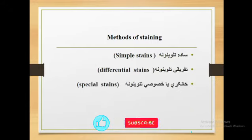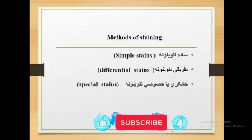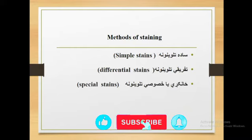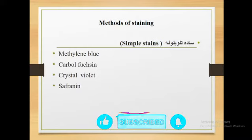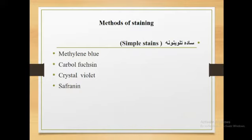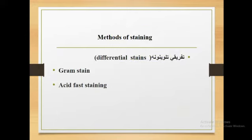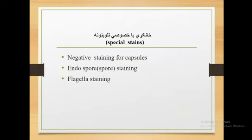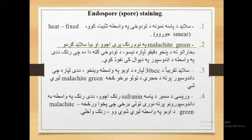We have special bacteria that require specific staining techniques. We use methylene blue, carbon fuchsine, crystal violet, and safranine. We use the bacteria with gram staining and acid-fast staining, and then negative stain, capsule stain, endospore stain, and flagella stain.